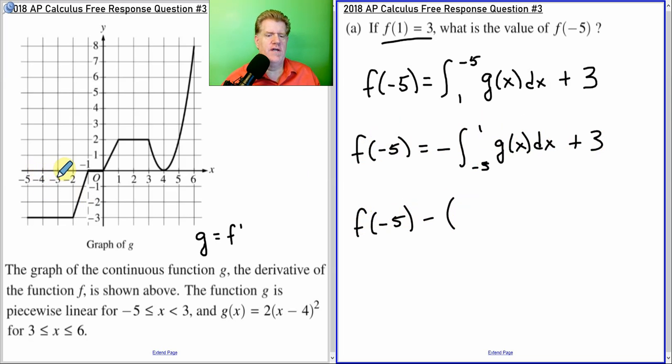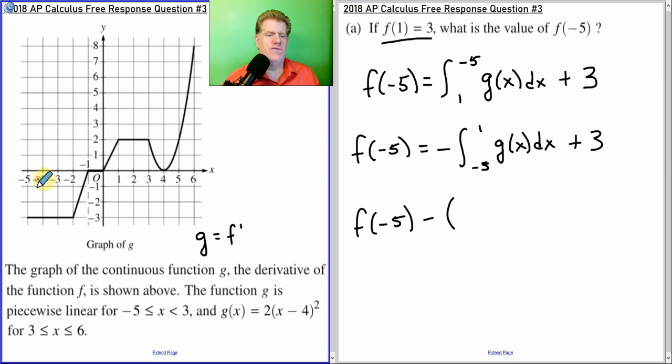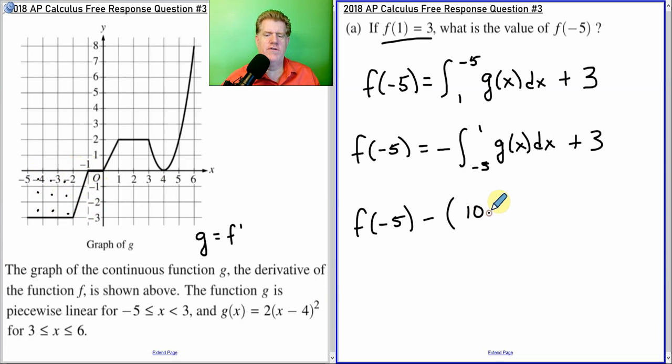So, the area between negative 5 and negative 2 is 1, 2, 3, 4, 5, 6, 7, 8, 9. And this is 1 and a half. So, we have 10 and a half up until there. But it's below the axis, so it's negative. There's no area at all between negative 1 and 0. And there's an area of 1 after I'm between 0 and 1.